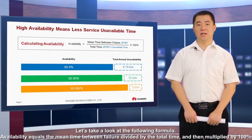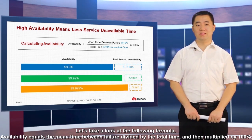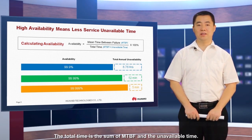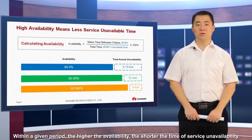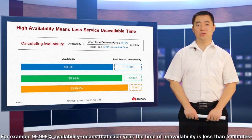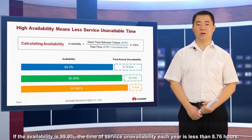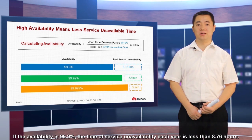Availability equals the mean time between failure divided by the total time, multiplied by 100%. The total time is the sum of MTBF and the unavailable time. Within a given period, the higher the availability, the shorter the time of service unavailability. For example, 99.999% availability means that each year the time of unavailability is less than 5 minutes. If the availability is 99.9%, the time of service unavailability each year is less than 8.76 hours.